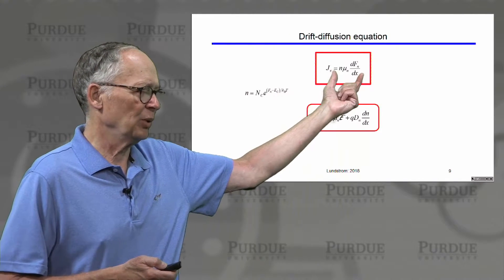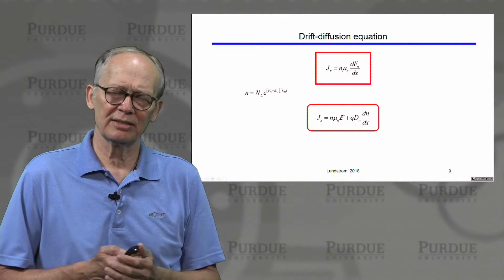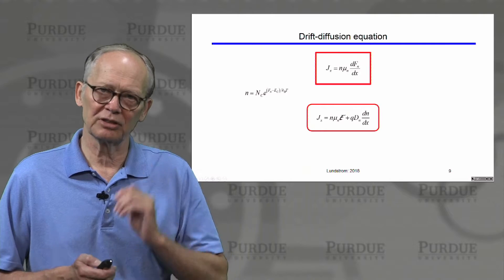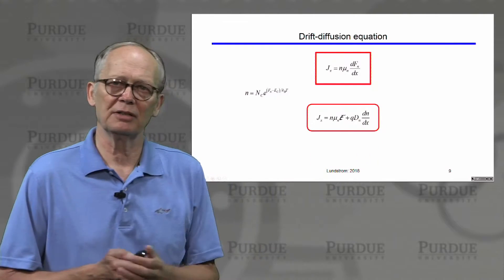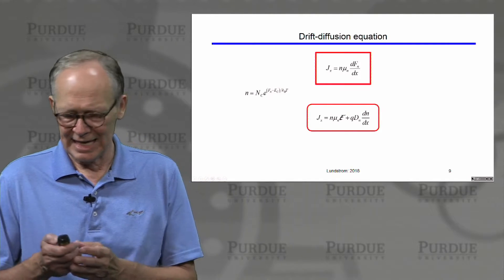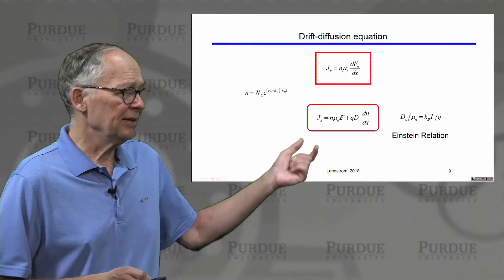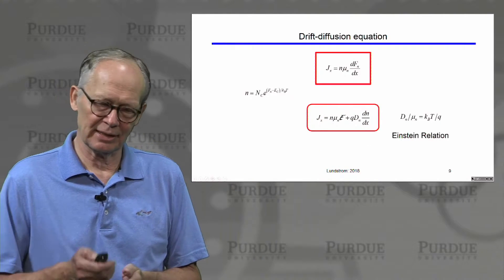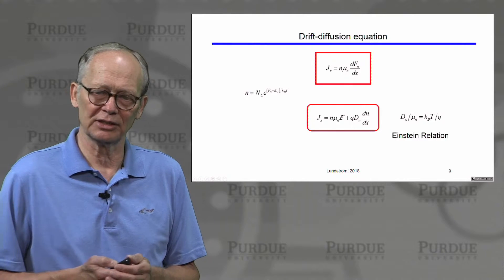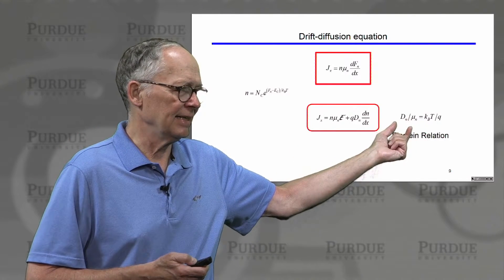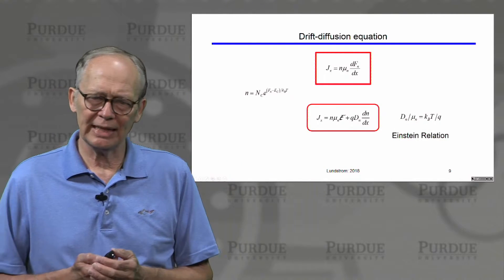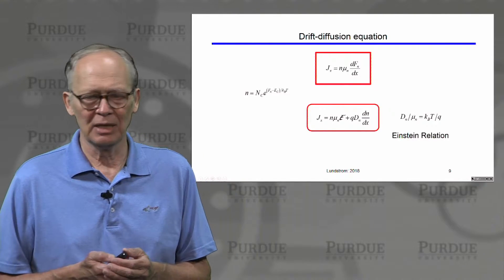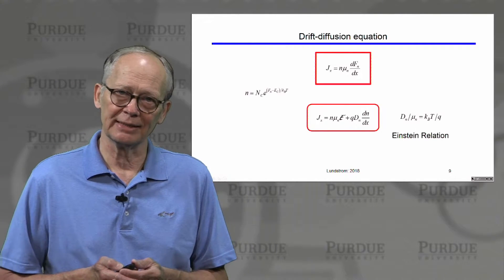Beginning with this diffusive current equation, in the non-degenerate limit the electron density is related to the quasi-Fermi energy by a known expression. Taking the derivative, we can rewrite the current equation in an equivalent form — the drift-diffusion equation. In a traditional semiconductor course, this is usually the starting point. We've presented it differently so that we can handle both small and large devices.